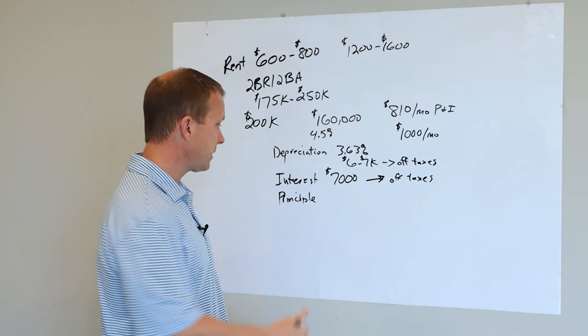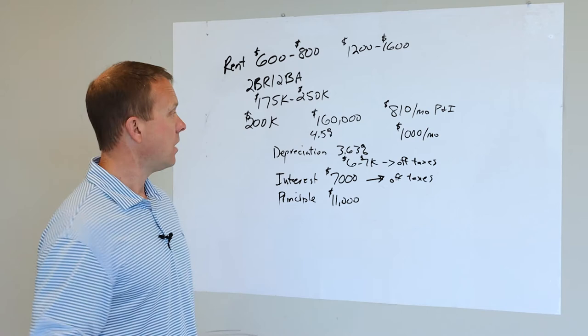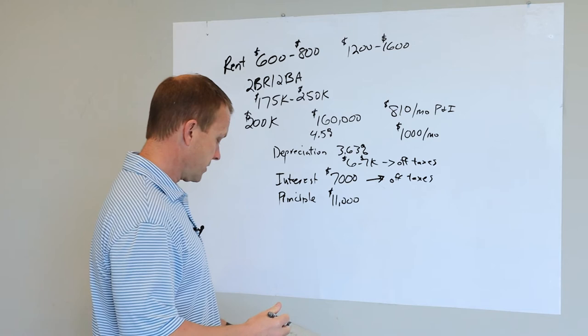So over a four year period, it's going to be roughly $11,000 that is going to be less that you owe. So instead of after the four year period, instead of owing $160,000, you're going to owe $149,000.